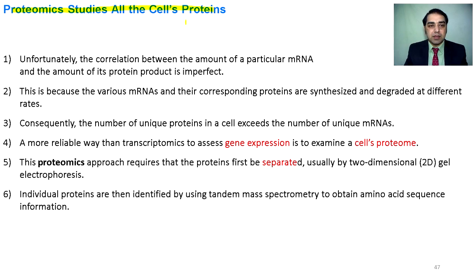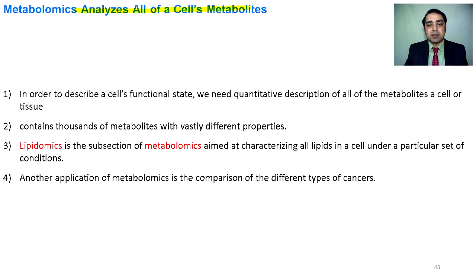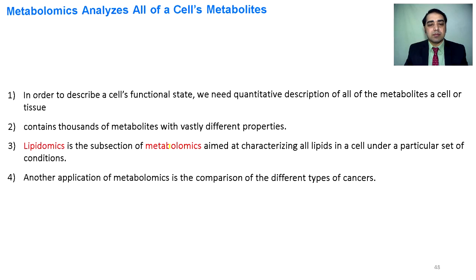Proteomics studies all the cell's proteins. Unfortunately there is poor correlation between mRNA and its corresponding protein, so study of the transcriptome alone is not enough; we must study the protein levels of different genes. Proteomics uses 2D gel electrophoresis to separate proteins, and then overly expressed or downregulated proteins are isolated and identified, revealing which proteins are overly expressed under certain metabolic conditions. Metabolomics analyzes all the cell's metabolites: under some metabolic conditions some enzymes are present in high concentration, some metabolites accumulate, and some are consumed. Lipidomics is also important in the study of metabolomics.